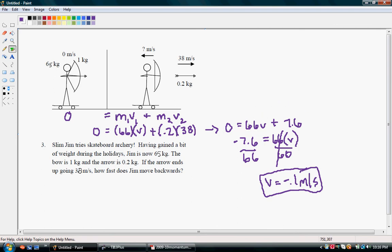So, since Jim and the bow are so much more massive, they're going to have a far less velocity.